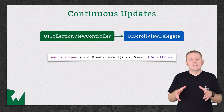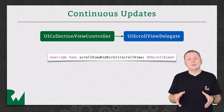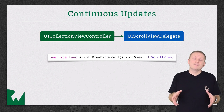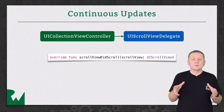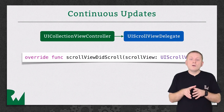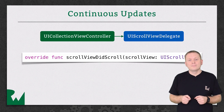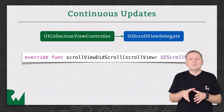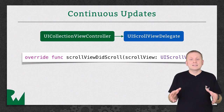For the parallax effect to work properly, we need to be continuously updating the position of the image view as the user scrolls. We can take advantage of the fact that UICollectionViewController already conforms to the UIScrollViewDelegate protocol and override scrollViewDidScroll, which is called continuously as the user scrolls. In our implementation, we can ask the collection view for all its visible cells and iterate over them, asking each one to update its parallax offset, which will in turn update the position of the image view.